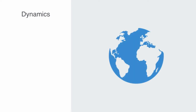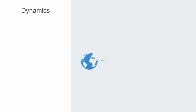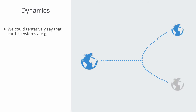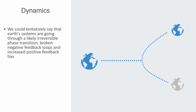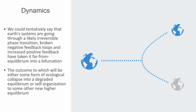Although there is very little we can say about the future of the Anthropocene, using the language of non-linear systems dynamics, we can tentatively say that Earth systems are going through a likely irreversible phase transition. Broken negative feedback loops and increased positive feedback have taken it far from equilibrium in what appears to be some form of a critical bifurcation state, the outcome of which will be either some form of ecological collapse into a degraded equilibrium, or self-organization to some new higher equilibrium — an outcome likely to be determined within the coming decades through economic choices made.